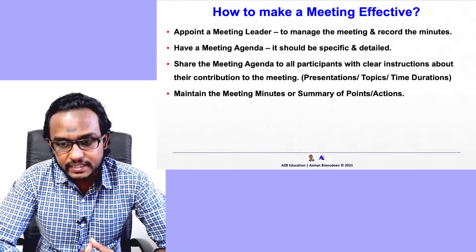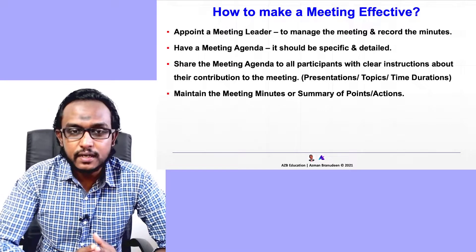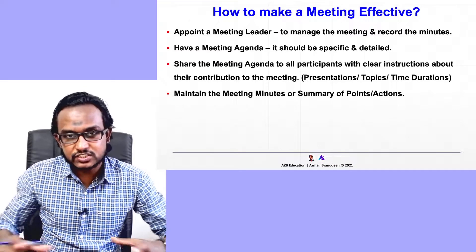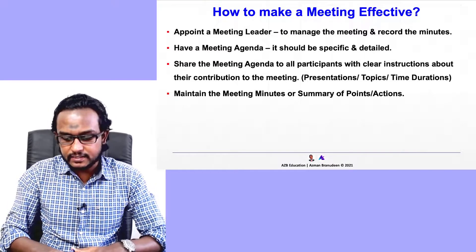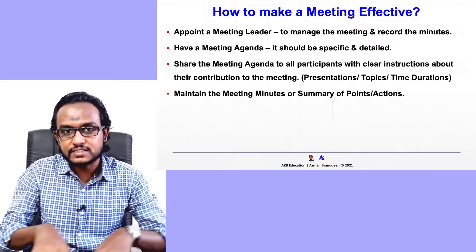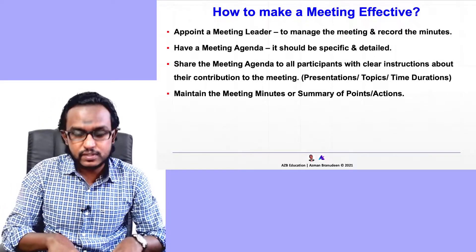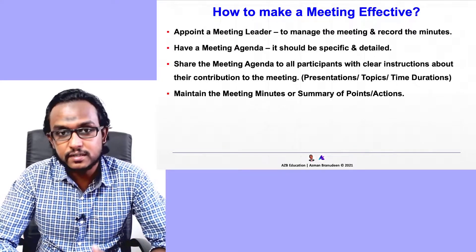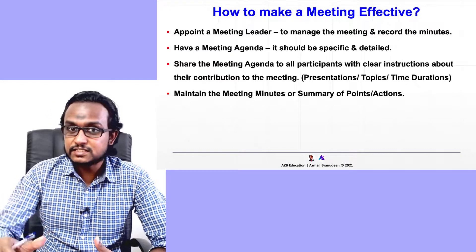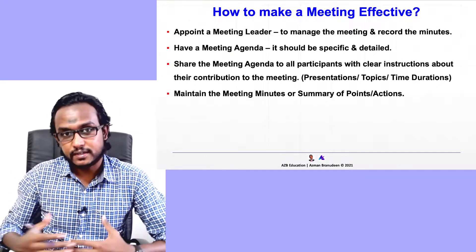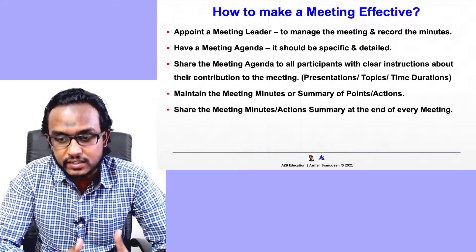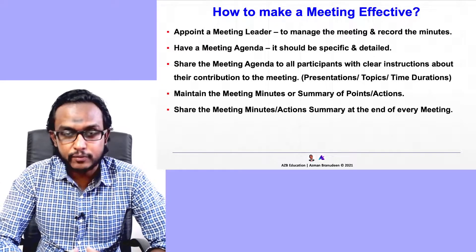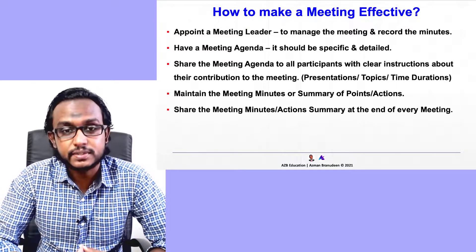The next point is to maintain meeting minutes, summary points, or actions. This connects with the recording of meeting minutes, but essentially I'm talking about a responsibility and action plan summary outlining who is in charge of what, with deadlines and dependencies. For example, someone may say: I can do this, my deadline is the 10th of November, but I need this from that person. When you share the meeting minutes at the end of the meeting, everyone knows their role, everyone is accountable and more responsible — and that really makes your company more effective.